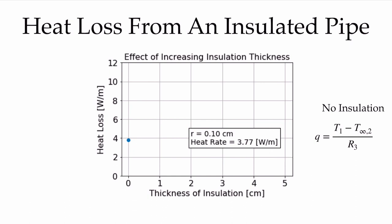I have this high-temperature fluid in the pipe and it's cold outside, so I should insulate it to save money. Let's start by adding a small bit of insulation and see what happens. We've added the insulation, so we have both the conduction resistance through the insulation and the convection resistance. The white part is the pipe itself and the black ring represents the current thickness of insulation. But notice what's happened — my heat rate has gone up from under 4 up to 6.62 watts per meter. We've added insulation and the situation has gotten worse; we're losing more heat.